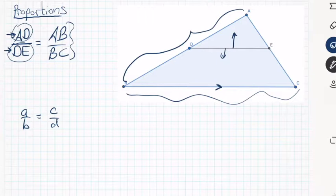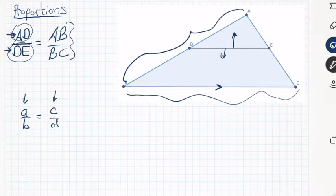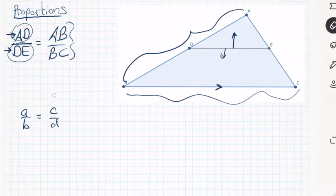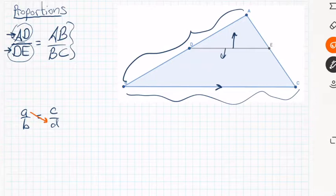Another way to set up a proportion — though most people don't see it clearly this way — is after you set up a proportion, you're going to what's called cross-multiply. I have warnings about cross-multiplication: it only works if you have one fraction on the left, one fraction on the right, and an equal sign in between with nothing else. So if you do cross-multiply, it doesn't matter what order — you can go A times D or D times A — so you get AD equals BC.